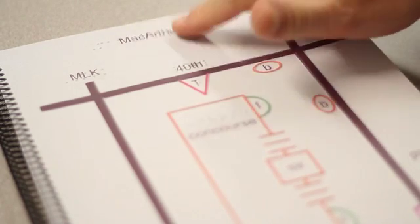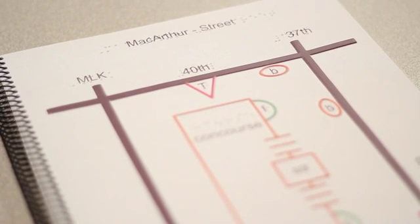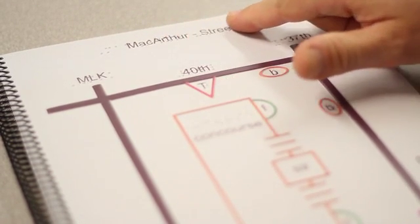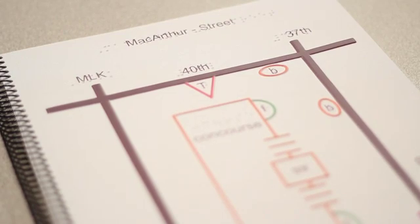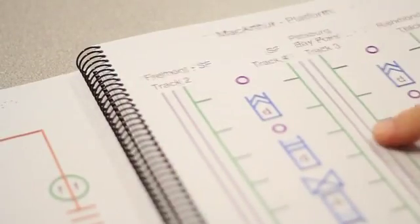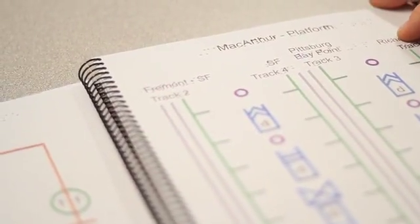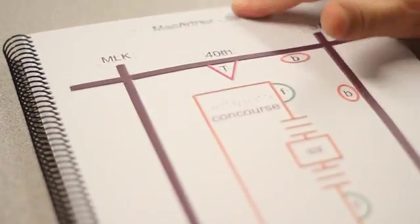For example, every map has a title in braille and print at the top. This one's title is MacArthur, and it indicates that it's the street map. The sequence of the maps is always street, followed by concourse, followed by platform. This is the first of the three maps in the MacArthur series.